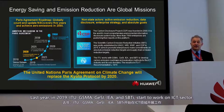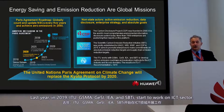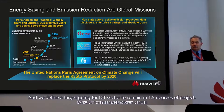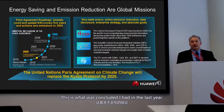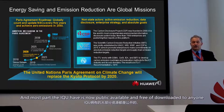Last year, in 2019, ITU, in collaboration with GSMA, the International Energy Agency, and SBTI, started working on the ICT sector and defined a trajectory to remain within the 1.5 degree target. This work was concluded at the end of last year and published as ITU-T L.1470, which is now publicly available and free to download.